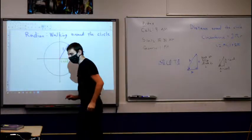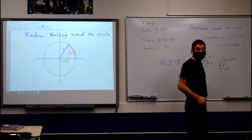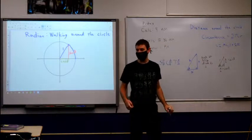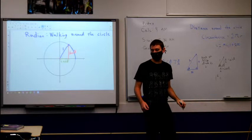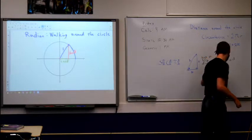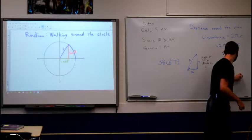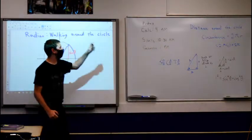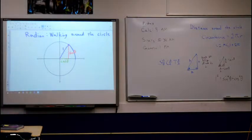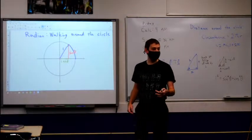I want to point out something else that happened over here. I can use the Pythagorean theorem and say that one squared — the hypotenuse squared — equals the sum of the squares of the legs. Does that look familiar? It should. In fact, if you're in your book or in your notes, these are usually called the Pythagorean identities. That's why they're called the Pythagorean identities, because they come from the Pythagorean theorem. This is where we get sine squared plus cosine squared equals one.